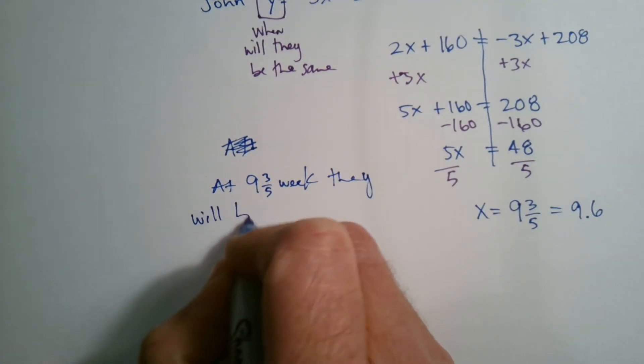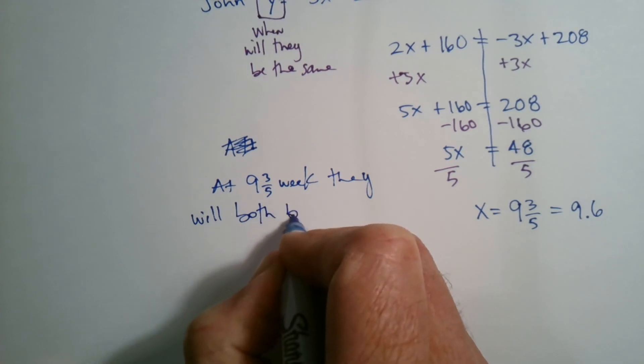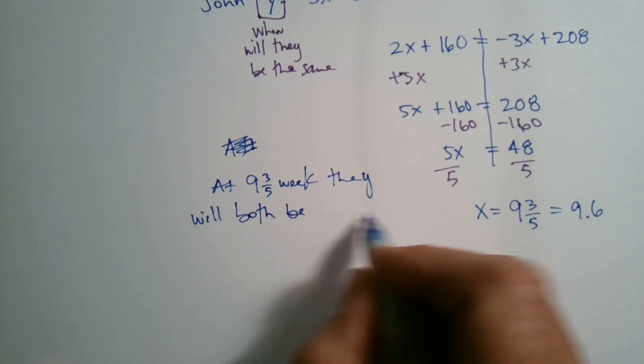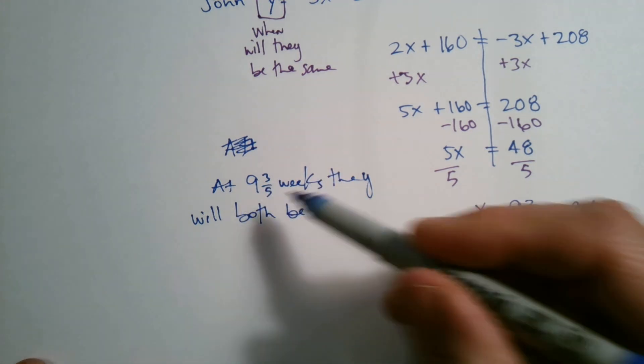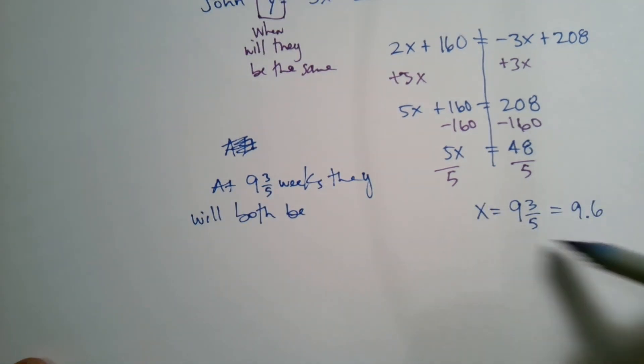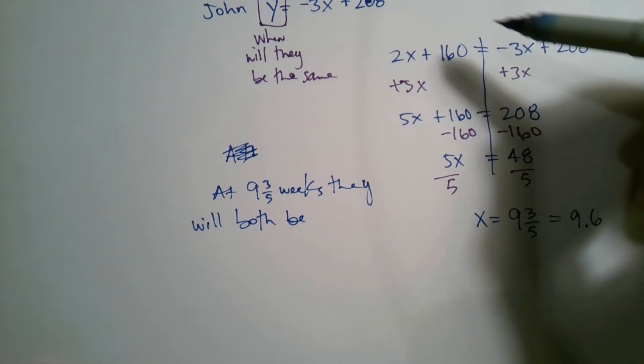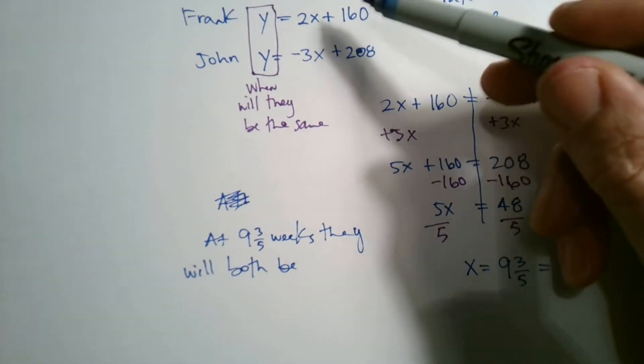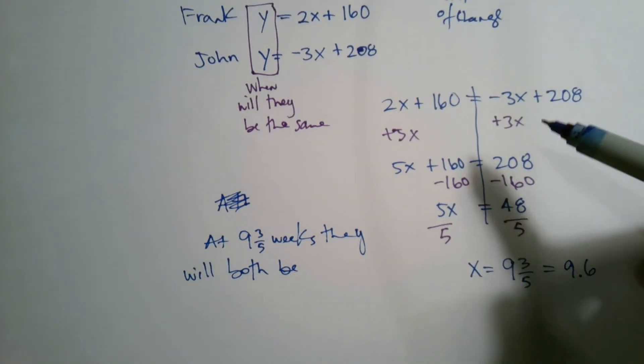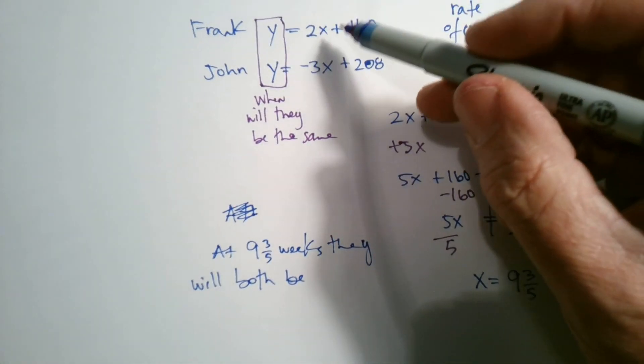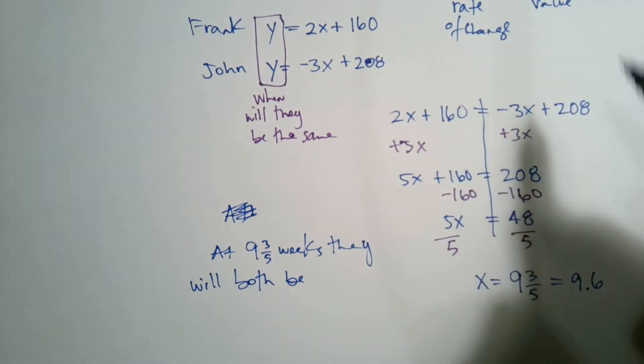they will both be, now I got to figure out how much they're going to be as far as pounds. So how do I figure that out? I know the weeks. So to figure out how much that's going to be, I need to take this number and plug it back into one of these equations to figure out what the weight is. It doesn't really matter which one I'm going to plug it into. I'm going to go ahead and stick with all the positive here. I'm going to put it into Frank.